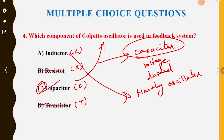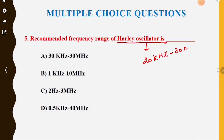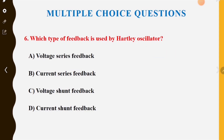Fifth MCQ: the recommended frequency range of the Hartley oscillator. Option A is 30 kHz to 30 MHz, Option B is 1 kHz to 10 MHz, Option C is 2 Hz to 3 MHz, Option D is 0.5 kHz to 40 MHz. The Hartley oscillator frequency range is 20 kHz to 30 MHz, so Option A is the correct answer.